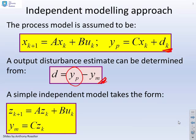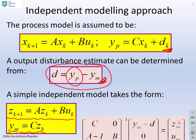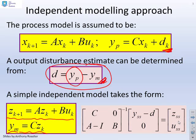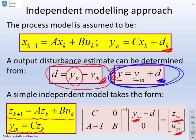Where does this model come from? A simple independent model could have an identical structure to the actual process: z = Az + Bu, but the main difference is there's no disturbance in here, because we're assuming that the disturbance estimate is the distance between yp and ym. Once we know what d is using this equation, then exactly as in the previous video, we can estimate the steady state values of z and u, which will give us a particular steady state output.